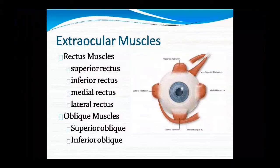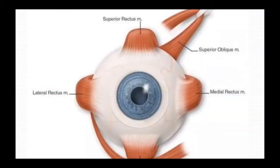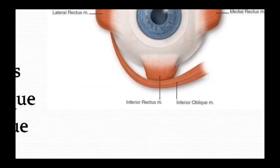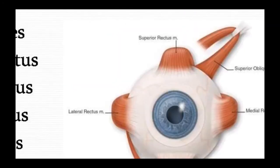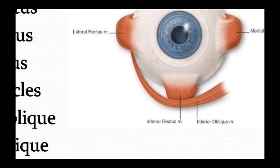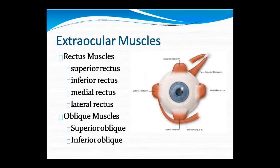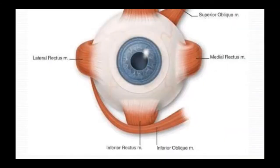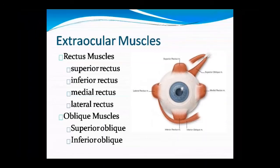Next are extra-ocular muscles. These include the rectus muscles and the oblique muscles. Specifically: superior rectus, inferior rectus, medial rectus, and lateral rectus. The oblique muscles are superior and inferior oblique.